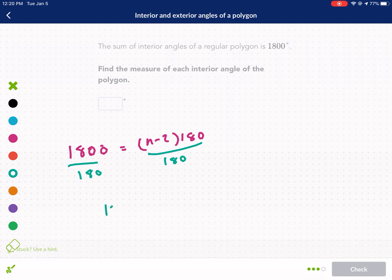You can do that right away. So I get 10 equals n minus 2. And then I add 2 to both sides. And I get 12. It's a 12-sided shape. Now, I also need to plug this 12 into the other formula now, which is n minus 2 times 180 over n. And that's going to tell me each interior angle.